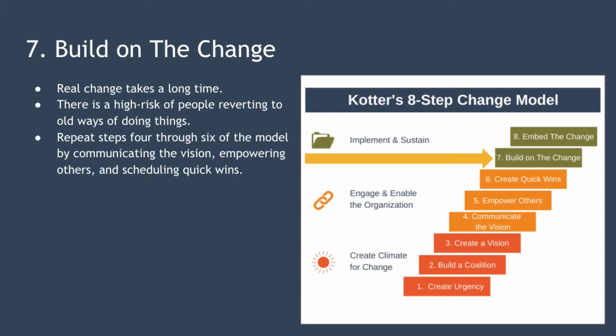This means you must continuously repeat steps four through to six of the model — communicate the vision, empower others, and schedule quick wins — over and over. It can be easy to take your foot off the accelerator once you see some quick wins. This step counters that tendency by encouraging you to stay focused and continuing to set goals to build on the successes and momentum you've already achieved.